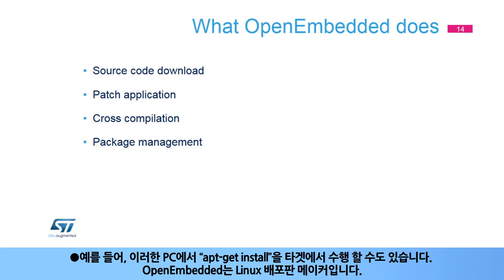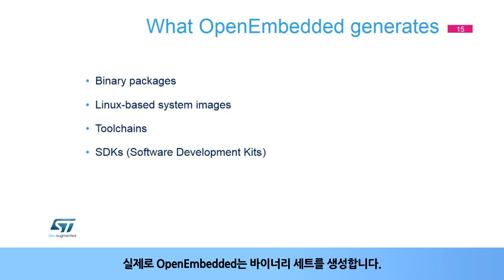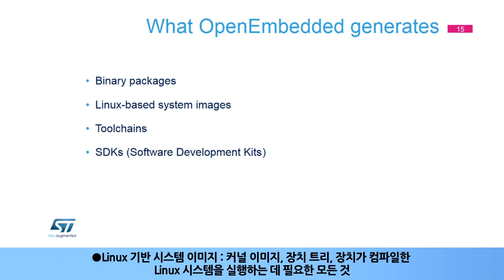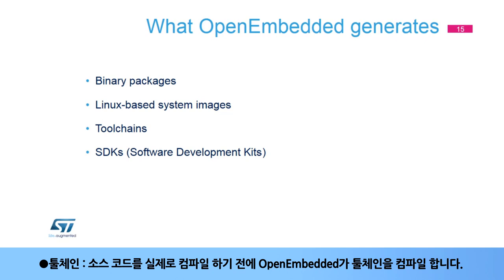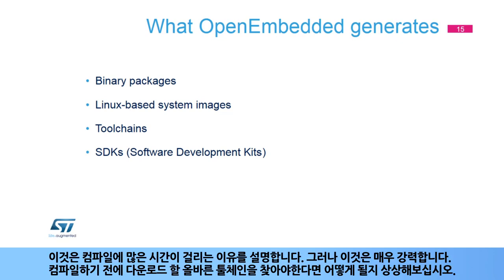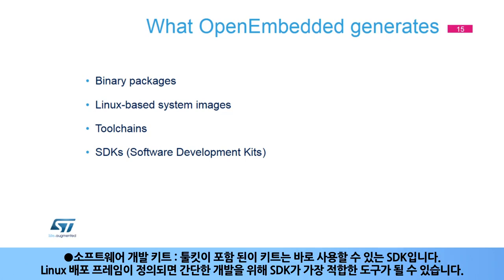In practice, OpenEmbedded generates a set of binaries: binary packages as explained; Linux-based system images including kernel images, device trees, and everything your device will need to run the compiled Linux system; and tool chains. Before actually cross-compiling the source code, OpenEmbedded compiles the tool chain — this is why compilation may take a significant amount of time, but it is quite powerful, since you don't have to find the right tool chain prior to compiling. It also generates a software distribution kit (SDK) containing the tool chain as a ready-to-use SDK. This graph from the Yocto project site sums up the compilation flow.